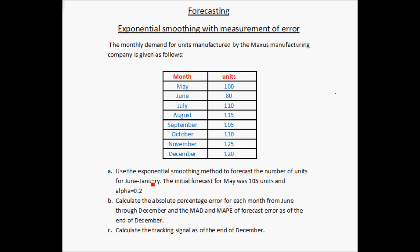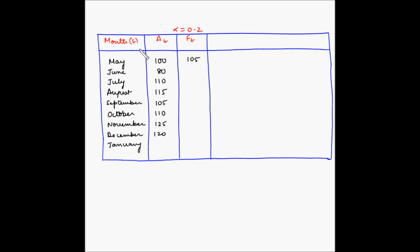We have to do the forecasting for months June, July, August, September, October, November, December, and January. The initial forecast for May was 105 units, and the value of alpha is 0.2. We also need to calculate the absolute percentage error for each month from June through December, and the mean absolute deviation and mean absolute percentage error as of the end of December.